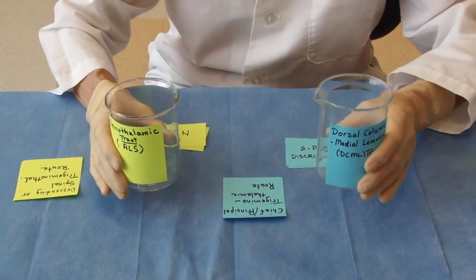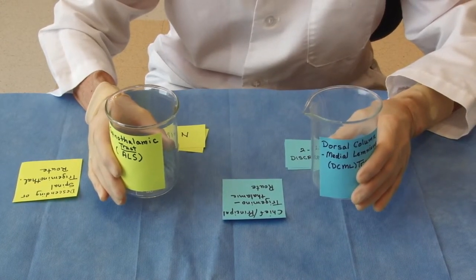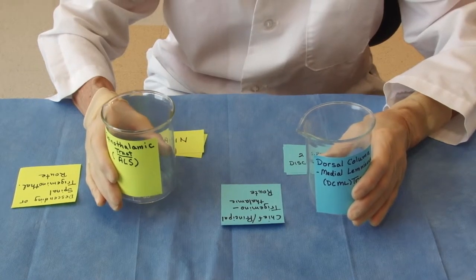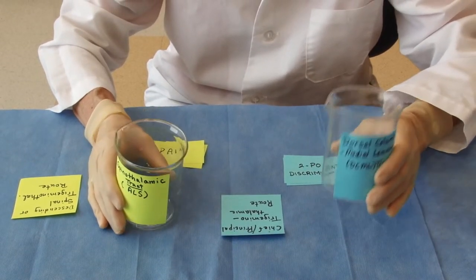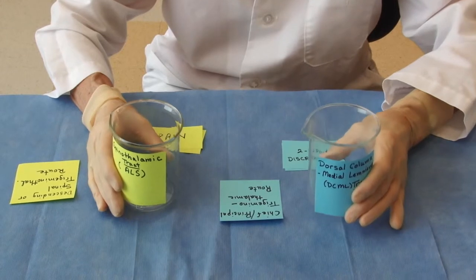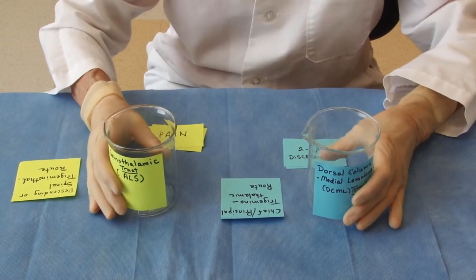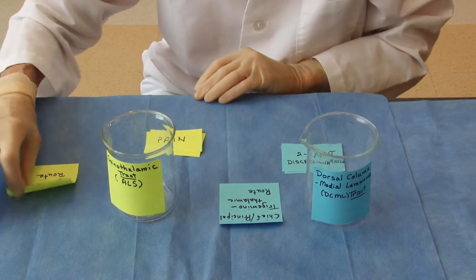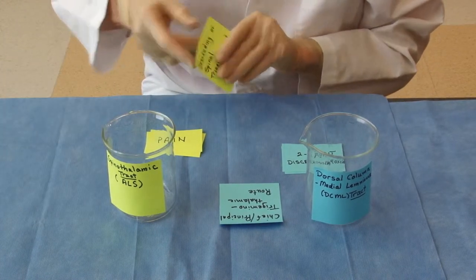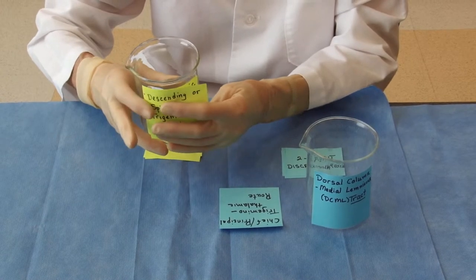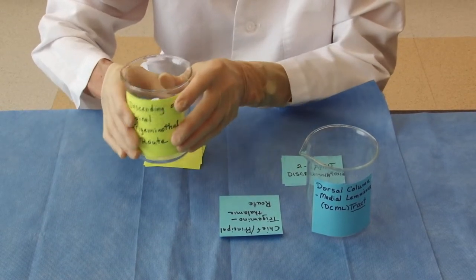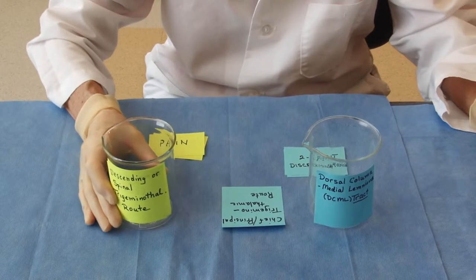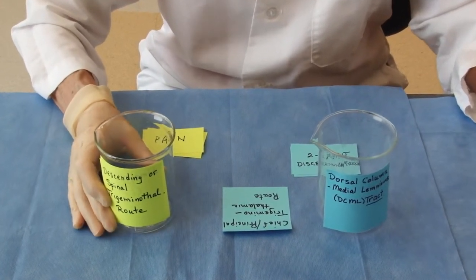So in the body, carrying sensation up from the spinal cord, we had two major pathways. We had one called the spinal thalamic, and we had the other called the dorsal column medial lemniscus. We have that same two types of tracts coming from the trigeminal nerve, and one is going to involve a synapse in a descending or spinal nucleus.